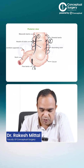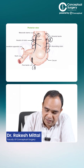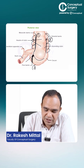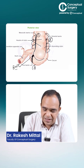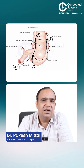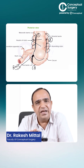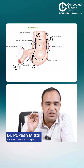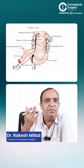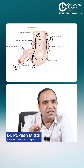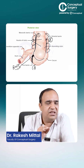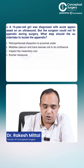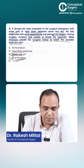Where the three teniae coli meet — that is the base of the appendix. This is the best and single most important landmark: 99.99% of the time you will never miss it. Just mobilize the cecum, follow the teniae coli, and where you see the point of union of the three teniae coli, that is the normal position of the appendix.